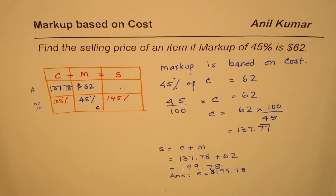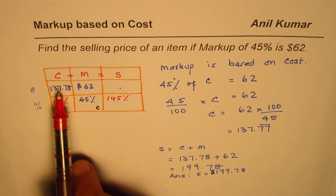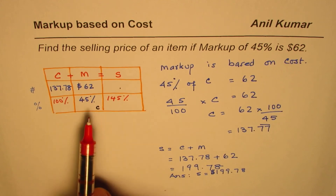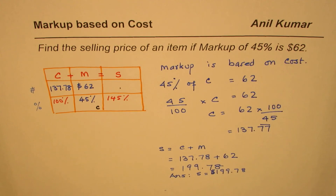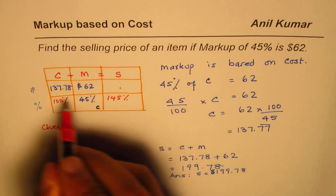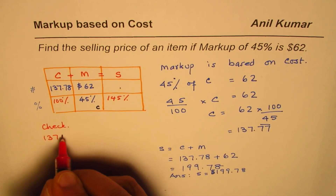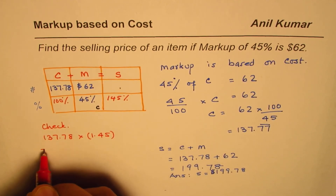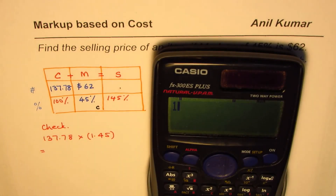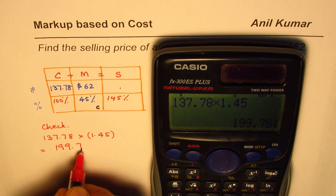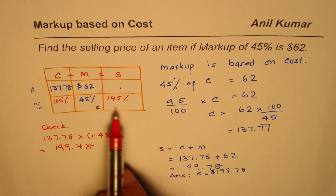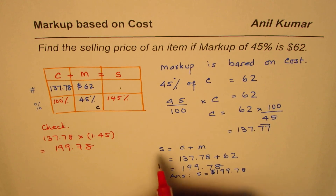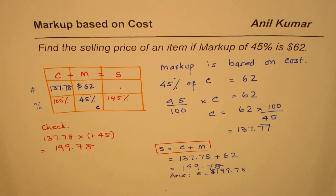Normally you could also find the selling price by taking 145% of the cost price. Let's verify: 137.78 times 1.45 equals 199.78 — the same answer. So you could use that method too, but it's better to simply add cost and markup to get the selling price of $199.78. I hope that helps, thank you!